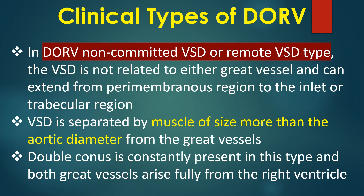In DORV non-committed VSD or remote VSD type, the VSD is not related to either great vessel and can extend from the perimembranous region to the inlet or trabecular region. The VSD is separated by muscle of size more than the aortic diameter from the great vessels. Double conus is constantly present and both great vessels arise fully from the right ventricle.